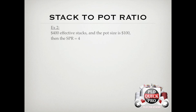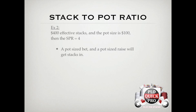In example 2, we have $400 effective stacks and the pot size is $100, which means the SPR is 4. $400 divided by $100 is 4. The important thing to take away is that a pot-sized bet and a pot-sized raise will be enough to get stacks in. But also, if you bet 100 into 100 and someone called you, now you only have $300 in your stack and the pot size is $300 on the turn. So if you bet pot one more time, it'll be enough to get stacks in.